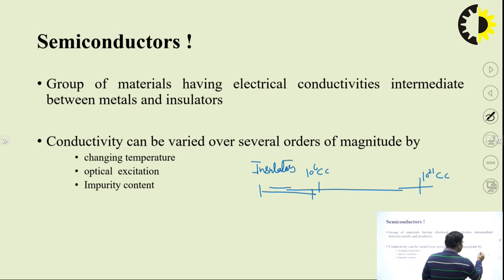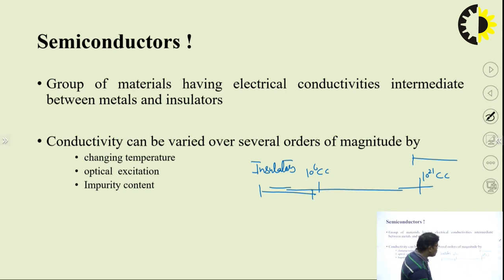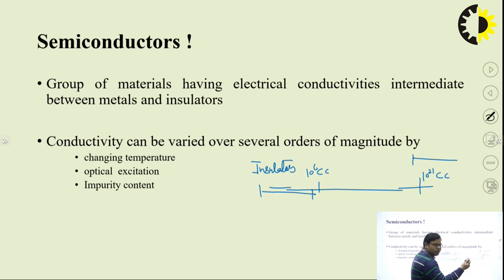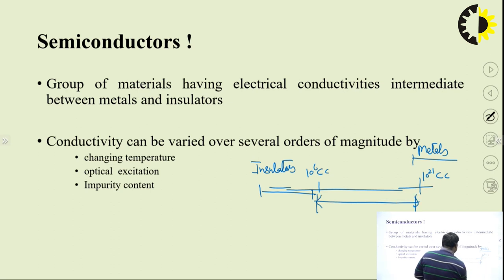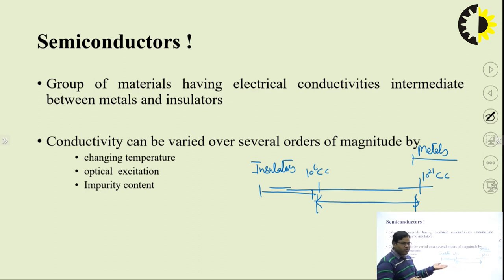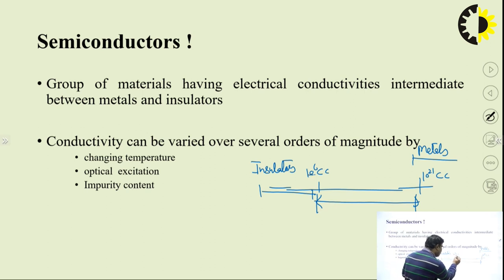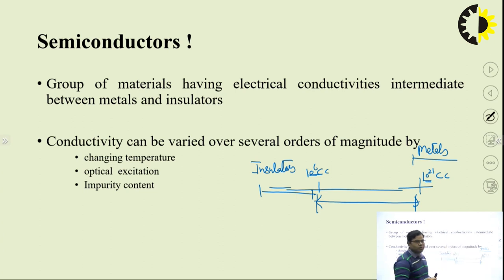For metals, we have more than 10 to the power 21 electrons per centimeter cube. For semiconductors, we have a large range — the number of carrier concentration as well as conductivity can be varied starting from 10 to the power 6 per centimeter cube up to 10 to the power 21 per centimeter cube.